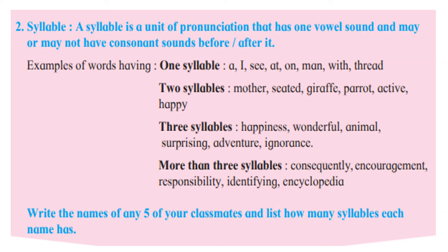Now question number 2 — syllable. What is a syllable? A syllable is a unit of pronunciation that has one vowel sound and may or may not have a consonant sound before or after it. Generally, whenever we are speaking, wherever we are giving a stress mark, we identify it.